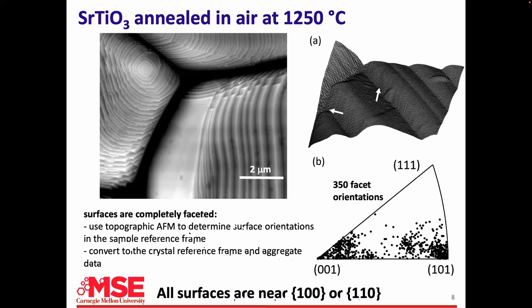We use electron backscattered diffraction to get the orientations of these grains — in fact I get orientations of 100 grains. Then we go in with an AFM, measure the actual surface topography, extract the vectors normal to the surface, and transform them back into the crystal frame. After looking at 350 different facets on 200 different grains, we find they're all clustered — all these surfaces are basically 100 or 110, within about a five-degree window of our uncertainties.